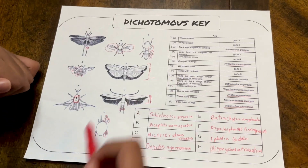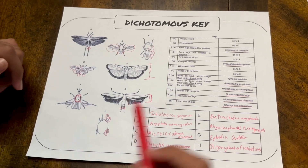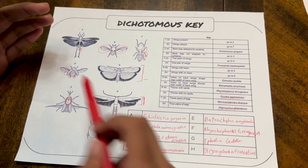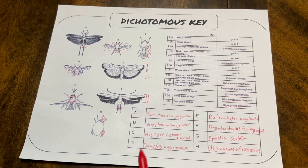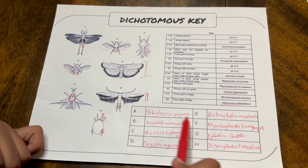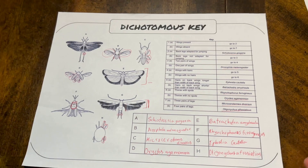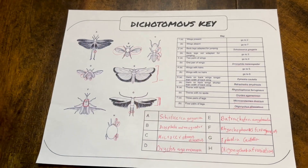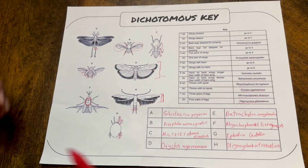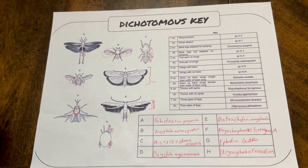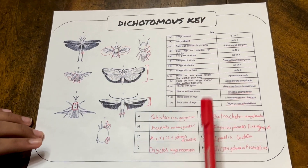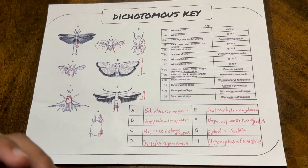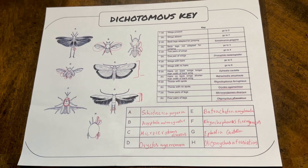So we took the entire list, identified each organism based on its respective scientific name, and matched them together. If you'd like, you can search these scientific names to find out what these organisms actually are and their purpose in the ecosystem. This is how you use the dichotomous key to identify organisms, and this is also the purpose of the dichotomous key.